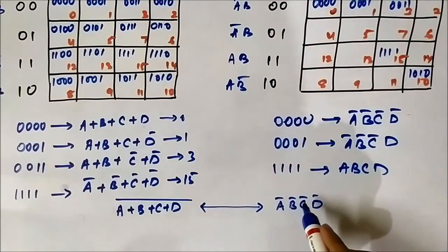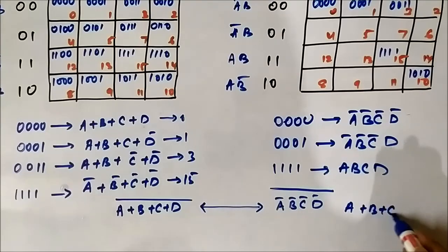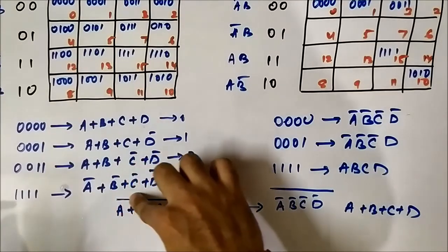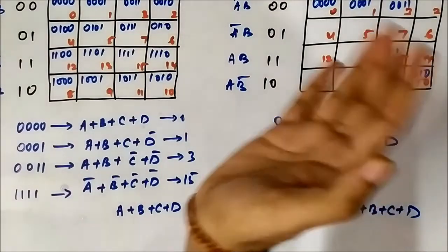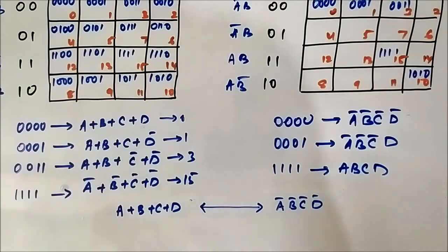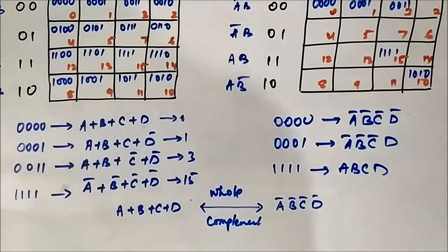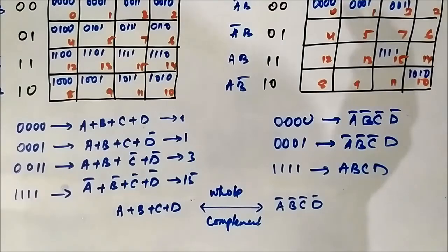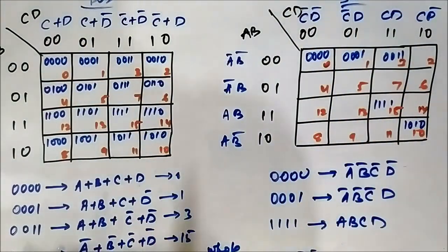Similarly, if we take the SOP representation of the first cell and whole complement it, we will get A or B or C or D — the POS form. So each cell's representation is the whole complement of the other, by the simple application of De Morgan's theorem. This is the 4 variable POS KMAP, and we have compared it with the SOP KMAP.